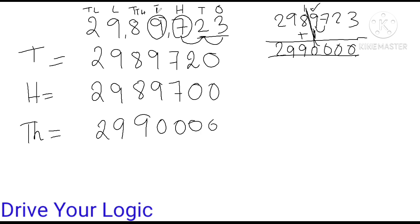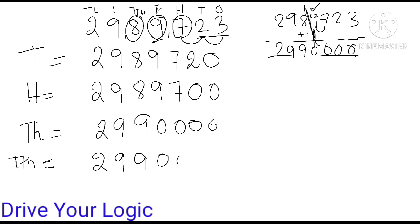After thousands, we round up to ten-thousands. For ten-thousands, the digit here is 8 and the next digit to check is 9, so again there will be a round up. The answer will be: 2 then 9 gets the increment — making it 9 — and the rest of the digits become zero, giving 2,990,000.